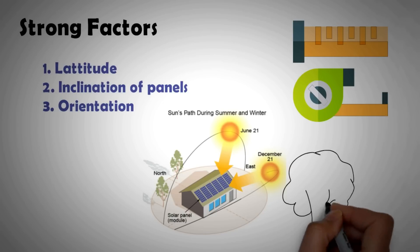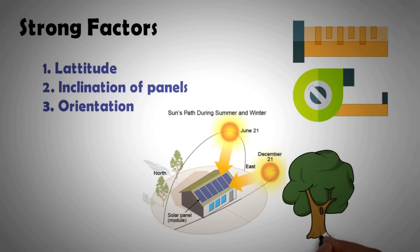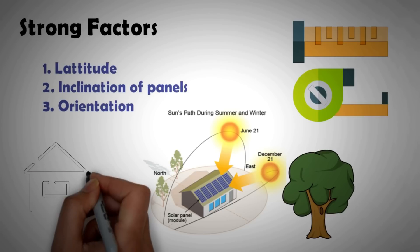The more accurate software also factor in other topographic and landscape details like the presence of trees, hills and buildings that can cause shading and reduce the output.